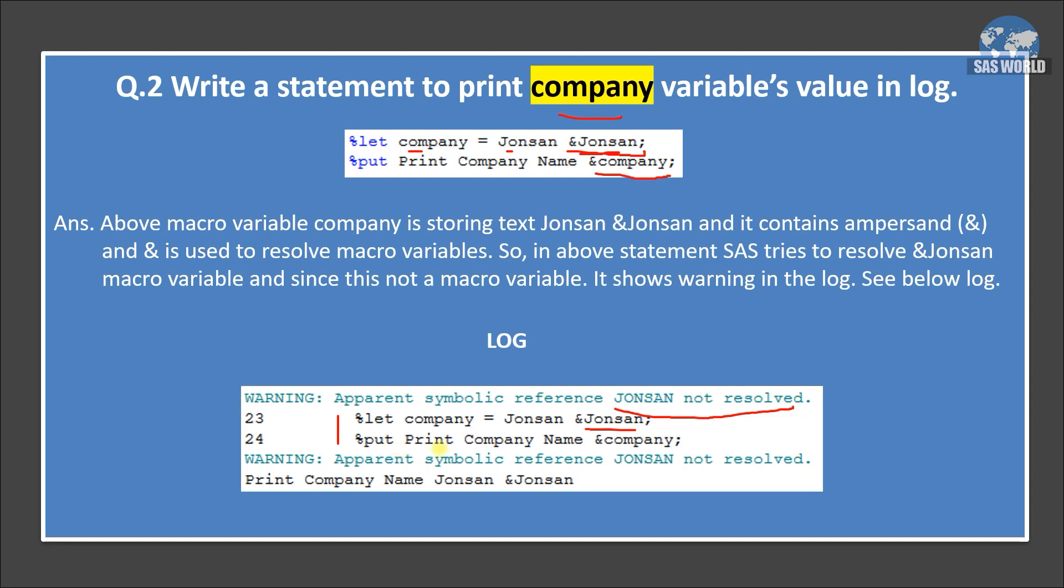So that's why we are getting warning. And in another line, we are trying to print the value of macro variable company. And when we are printing company is trying to access this macro variable because of that, we are getting another warning. So we are getting two warnings in it. However, the message is printed in the log Johnson and Johnson. But if you are working in an organization, we cannot afford a single warning in already established process. So we need to remove these warnings. Let's see how we can remove these warnings.